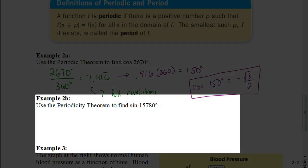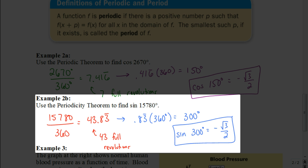Now try this one: find the sine of 15,780 degrees. Pause the video and hit play when you're ready to check. The answer is −√3/2. You should have started with 15,780 ÷ 360 = 43.8̄3̄ — that's 43 full revolutions bringing you back to 0 degrees. The remaining 0.8̄3̄ times 360 gives exactly 300 degrees. The sine of 300° on the unit circle is −√3/2.